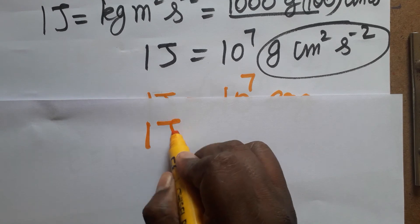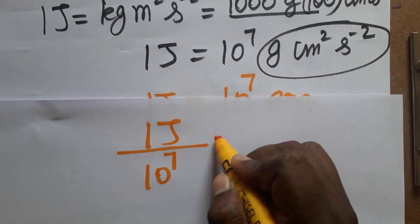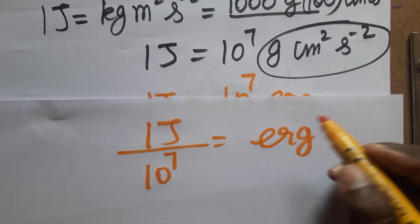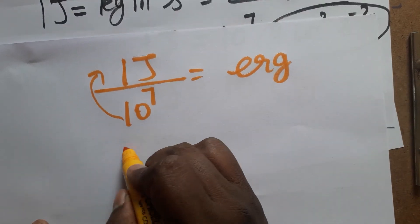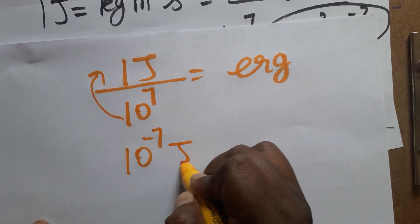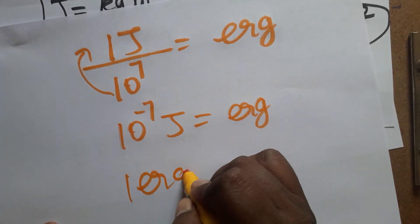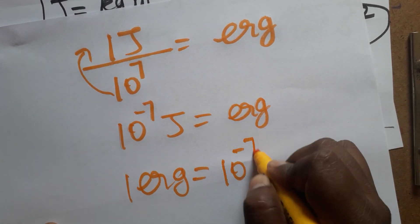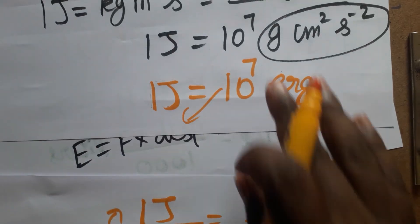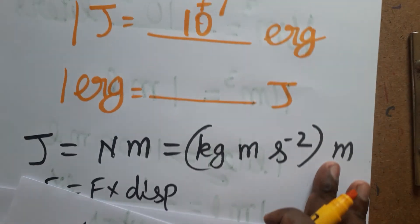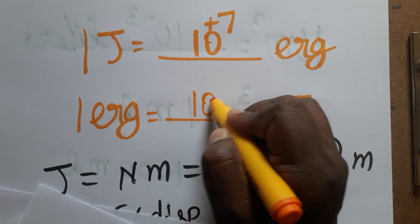So 1 Joule divided by 10 to the power 7 is equal to erg. From denominator if you are taken as numerator, 10 to the power plus 7 is going to change as 10 to the power minus 7 Joules is equal to erg. So 1 erg is 10 to the power minus 7 Joules.